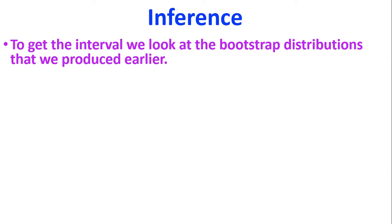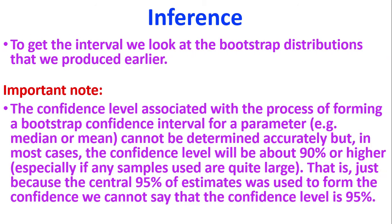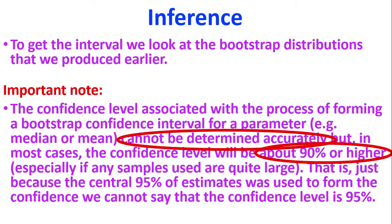We first have to get our bootstrap distribution and find our interval from that. Something important to know is that the confidence level — we can't determine it exactly. We've got to be careful with our language. Those confidence levels that we get are around about 90%, so that's just a general guideline. We cannot be absolutely certain, but we're reasonably — about 90% — pretty confident with those answers that we get.